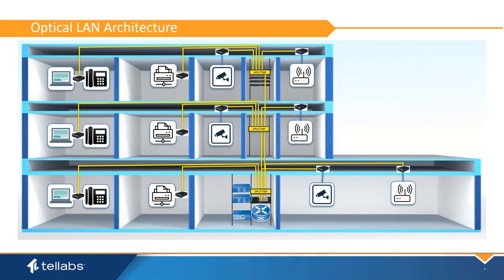In a passive Optical LAN solution, the router is retained in the topmost layer and the optical line terminal serves the same purpose as the campus aggregation switches. The building aggregation switching is accomplished by the optical splitter, which is a passive device, so there are no power requirements and little management while being highly reliable. The optical network terminal provides connectivity to the users and end devices.